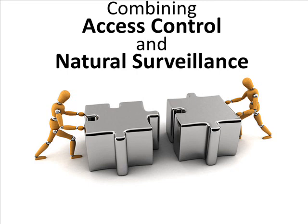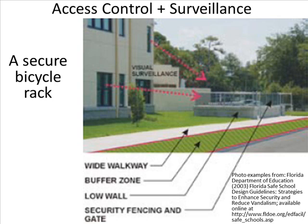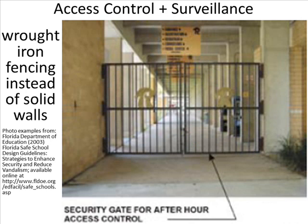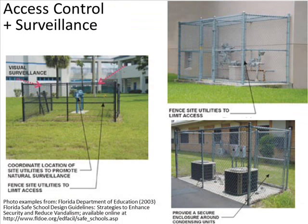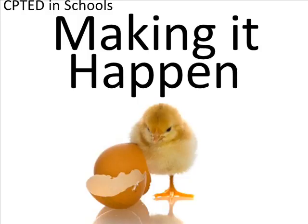CPTED works best when combining multiple approaches — access control and natural surveillance together. For example, a secure bicycle rack where surveillance is maintained — you can't get in, but you can see who has gotten in. Wrought iron fencing instead of solid walls provides access control while still allowing you to see who is inside. Similar combinations can be applied at utility sites. These are a lot of ideas, but we also need to address how to actually make it happen in schools.